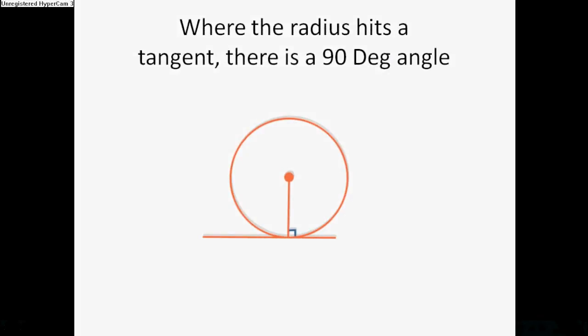The radius hits a tangent, there's a 90 degree angle formed. This is the radius here. This is the tangent. This angle here will be 90 degrees, and so will this angle here.